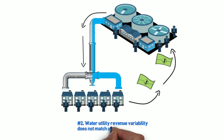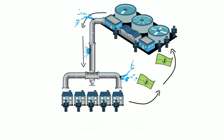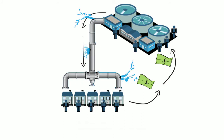This is the second reason a new business model is needed: revenue variability does not match cost variability. These two issues alone would create a financial challenge for utilities in the best of circumstances. Unfortunately, though, the industry is not facing the best of circumstances. In fact, the American Society of Civil Engineers gave the nation's drinking water and wastewater infrastructure a grade of D — passing, but barely.